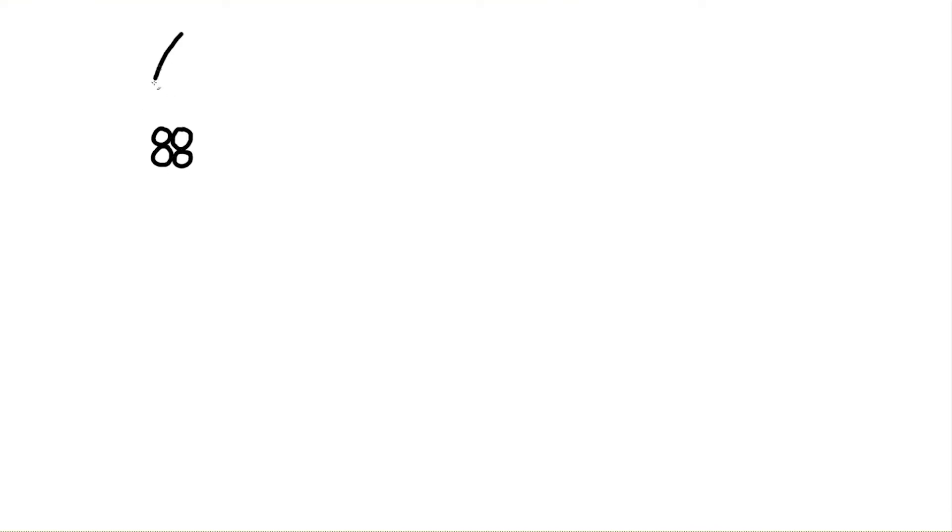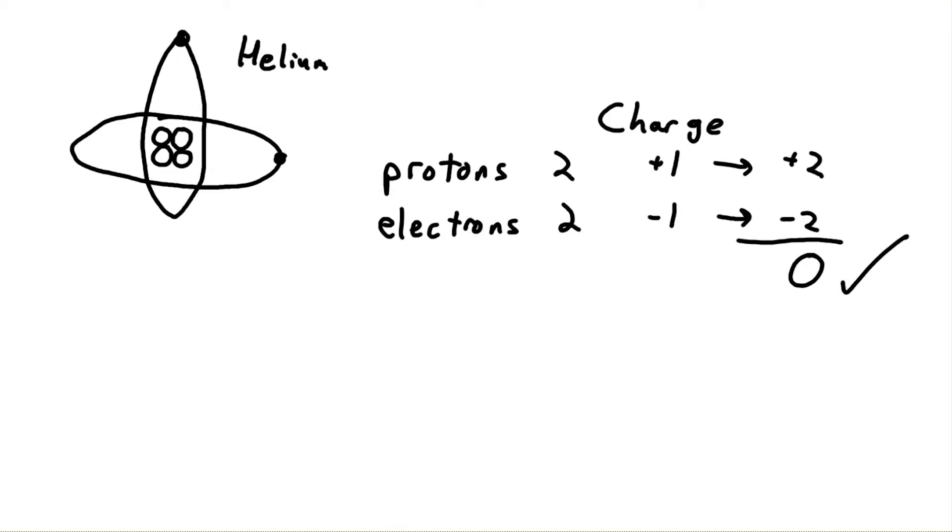As I briefly explained in my atom video, an atom typically has the same number of electrons as protons, which results in a net zero or neutral charge for the atom. An ion, however, has a net positive or negative charge, which means there is not the same number of protons and electrons.